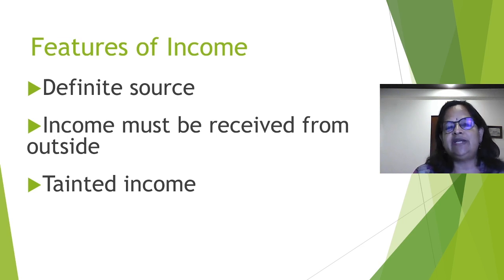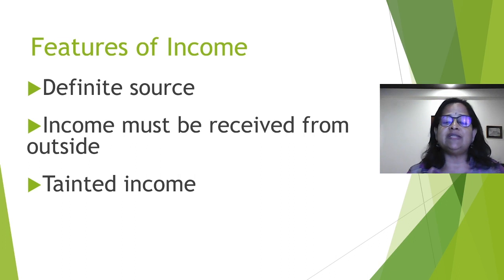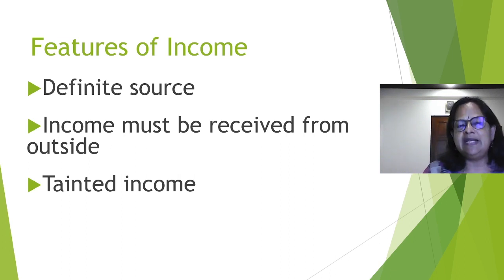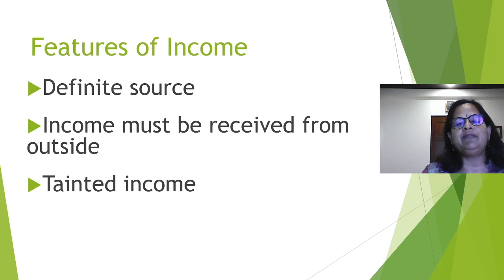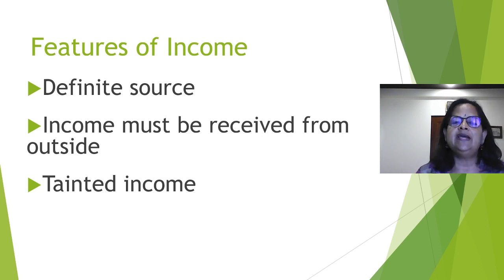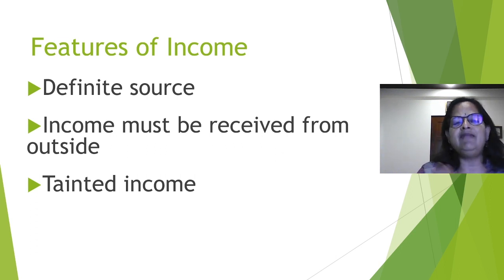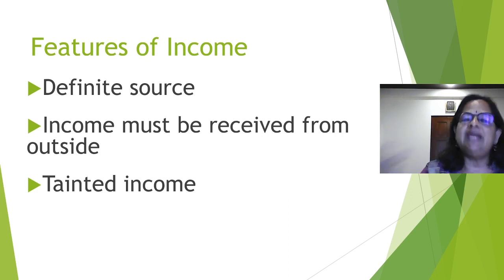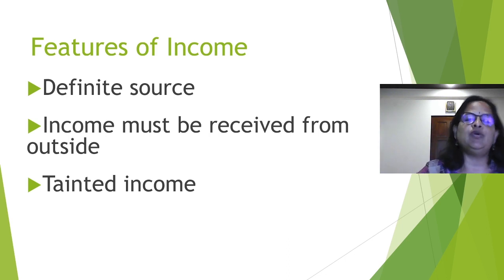Second point: income must be received from outside. As a housewife, I will do lots of household activities — clean the vessels, wash the clothes, do household work, buy provisions, cook for the family, keep the house clean and tidy. But nobody pays for me; that is expected from me. Income I will receive when I do somebody else's work. When I go and work in the university, they will pay me because I am doing their work. That is what 'income must be received from outside' means.